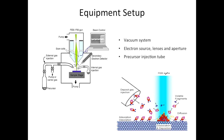and the precursor injection tube. The injection tube is used to deliver the precursor gas from the reservoir to the substrate surface. And we can see from the lower right image the exact process of how the electron assists the deposition reactions.